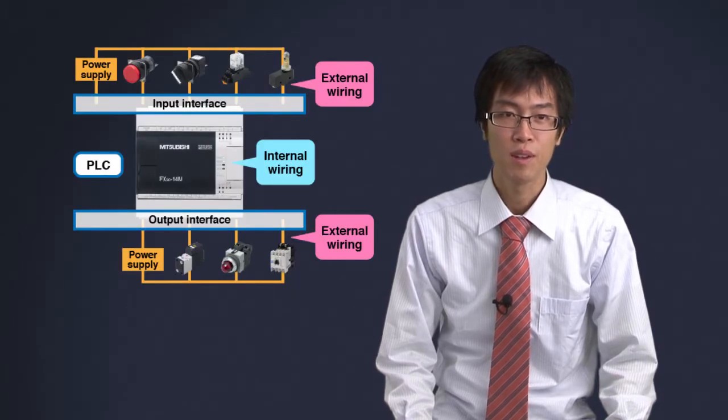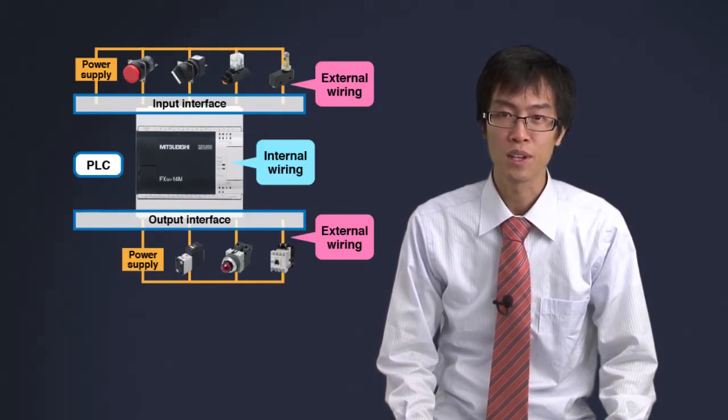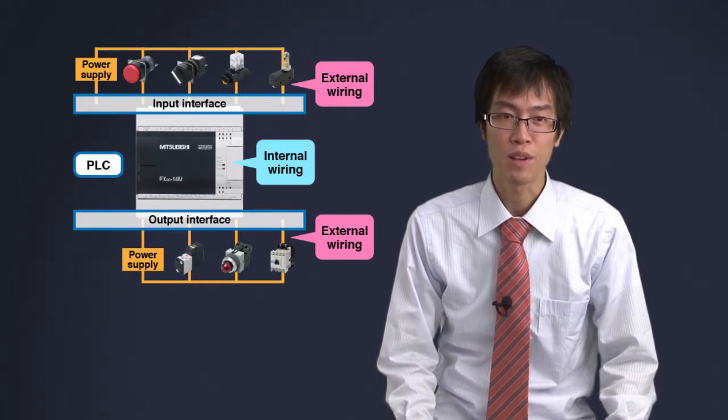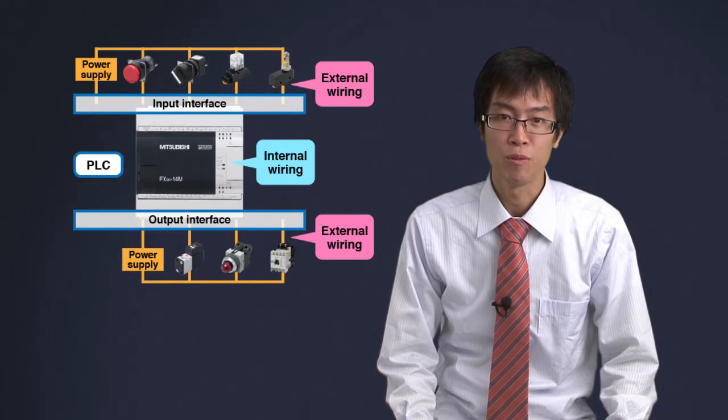A PLC has internal wiring and external wiring. Internal relays and terminals are connected inside of the PLC. We call this internal wiring. And external wiring refers to the connection between external devices and the terminals of the PLC.